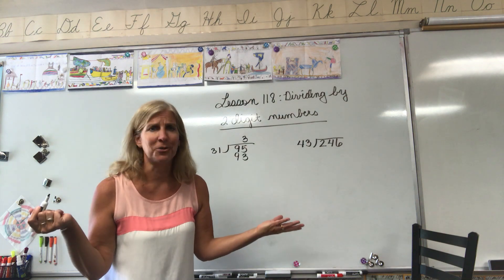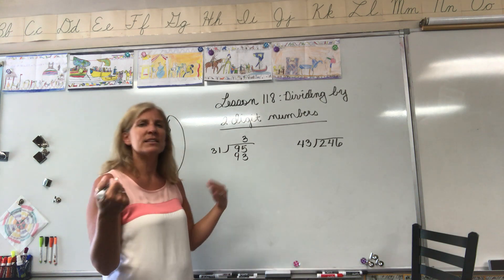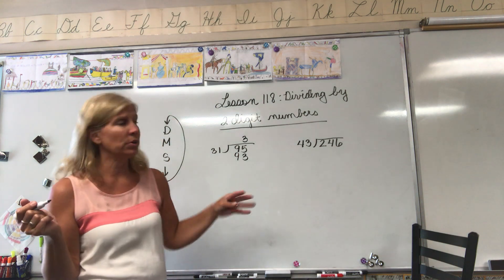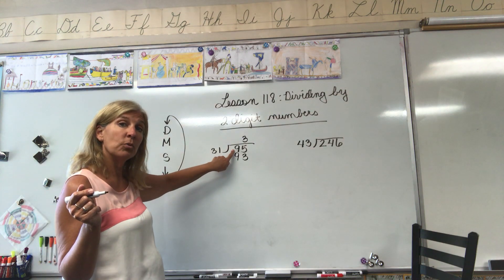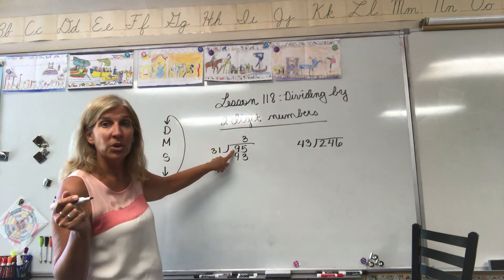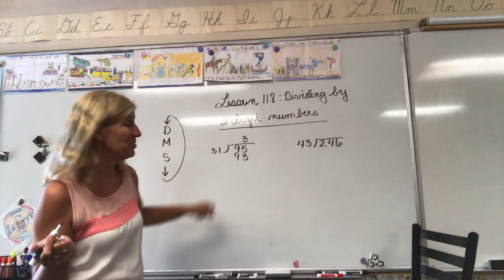We want a reasonable guess that we think is pretty close, but we don't know for sure until we carry on to the next step. If this 93 had been bigger than the number we were subtracting from, we would know we had guessed too high, but we didn't. We actually chose correctly.